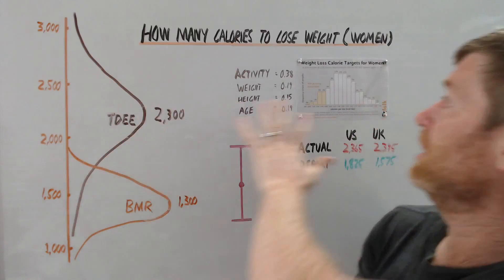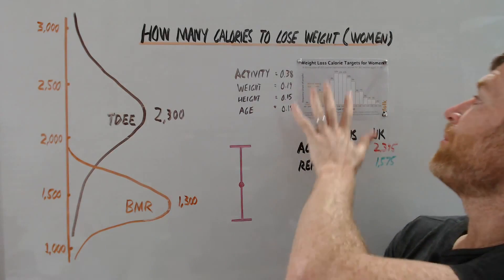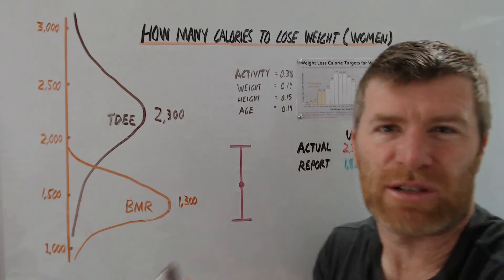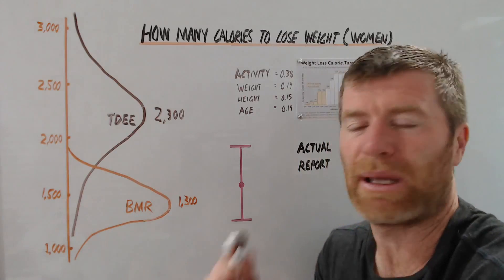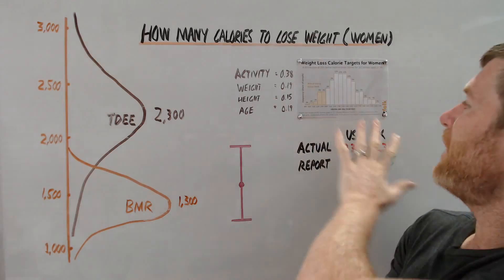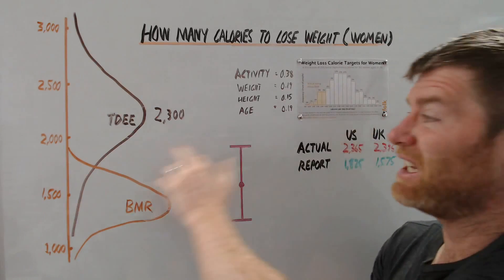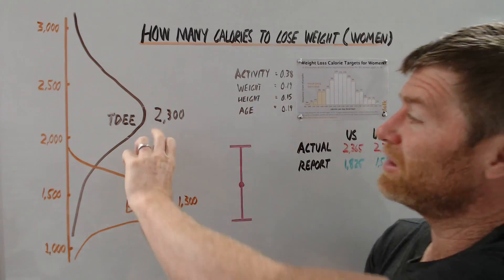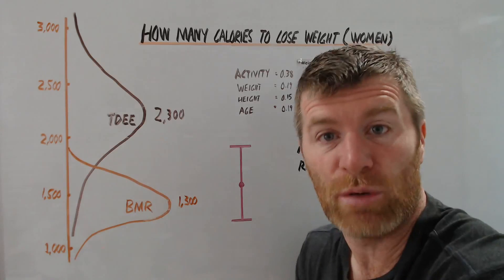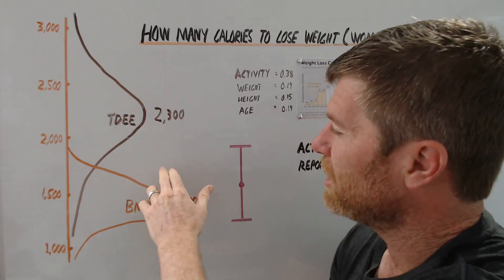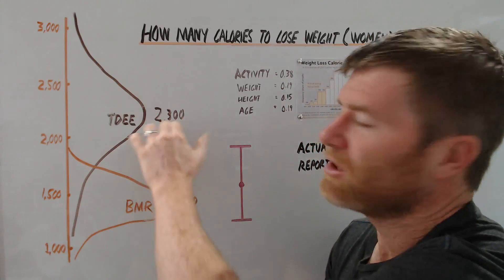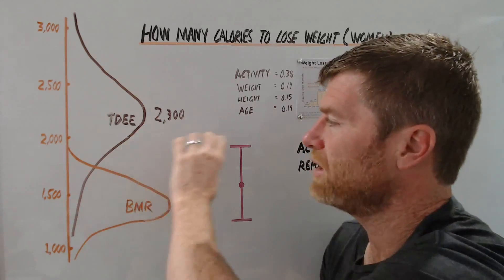And what I did was I took this distribution, I pulled it out of our report and applied a 25% deficit, which is a bit aggressive, but we know that people aren't that accurate. And what that would tell you is you would think that women would be able to eat around 1,800, 1,700, 1,900, somewhere in there. You would think that most women would lose weight pretty well eating between 1,700 and 2,000 calories. That's what you would think.